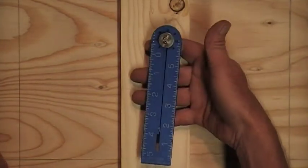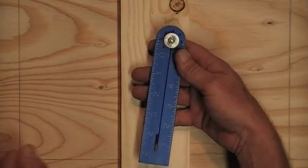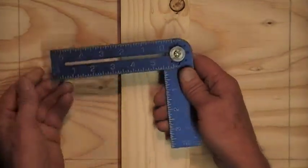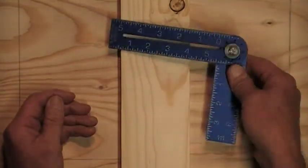First it folds up and stores very compact like this. Then flip the blade out and click it in at 90 for use as your basic tri-square.